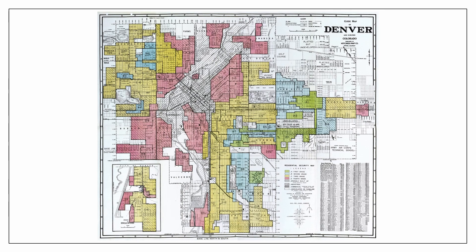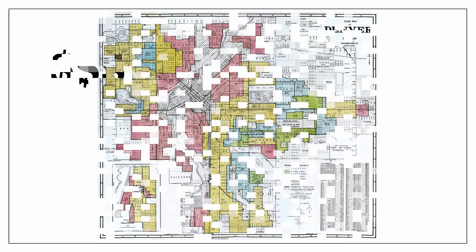In the 1930s, redlining in Denver marked certain areas as high risk because of their Black or immigrant residents. These areas received less investment, pushing minority populations into less desirable neighborhoods. Today, algorithms continue this legacy. This bias extends to raising rents, negatively targeting people of color compared to their white counterparts with similar financial profiles, continuing to drive low-income Latinx and Black households into poorer areas.